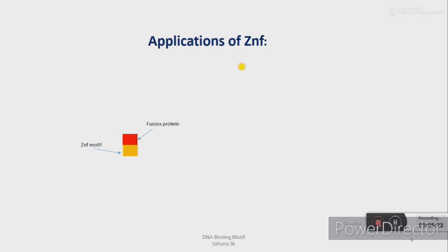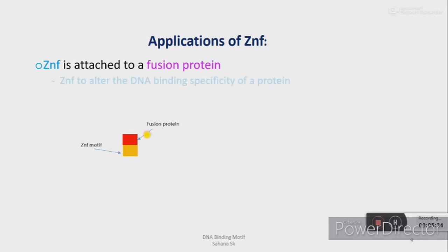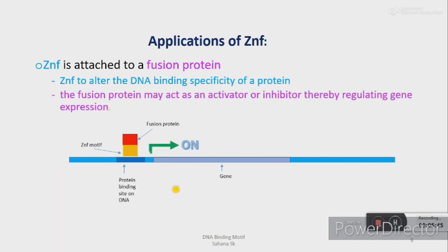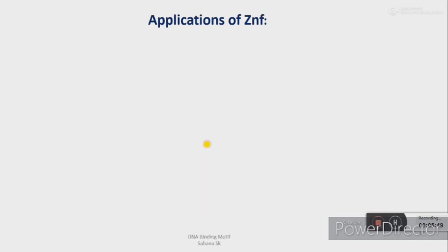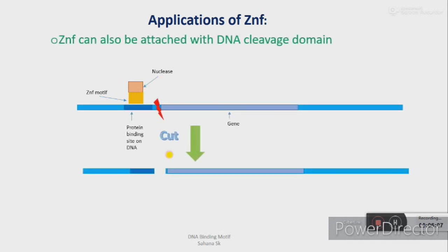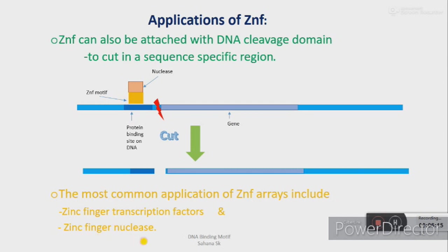In various protein engineering techniques, the zinc finger motif is attached to a fusion protein. The zinc finger motif will alter the DNA binding specificity, thereby allowing this protein to bind to a specific DNA sequence. The fusion protein may act as an activator or inhibitor, thereby regulating gene expression. The ZNF motif can also be attached to a DNA cleavage domain to cut in a sequence-specific region of the DNA. The most common applications of ZNF arrays include zinc finger transcription factors and zinc finger nucleases.